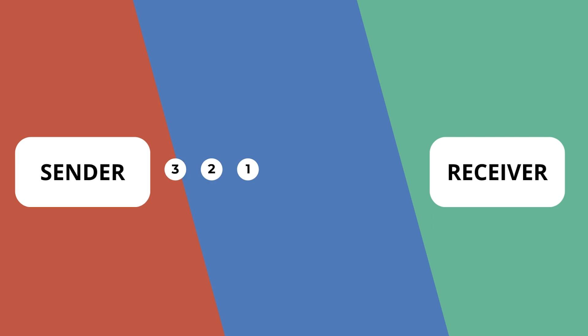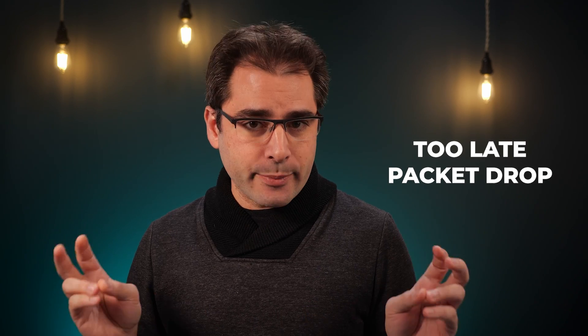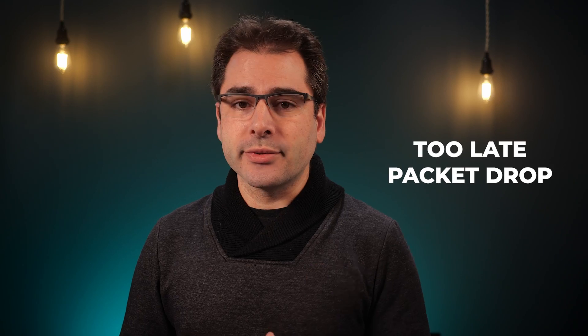If the receiver sees packets one, two, three, four, then eight, nine, ten, it sends back a NACK saying it missed five, six, and seven. That way the sender can prioritize retrying those missing packets first. If this all happens fast enough, the receiver might get the missing data in time to avoid losing any video. There's also a feature called too-late packet drop, which lets the sender skip retrying old packets it knows are no longer useful.